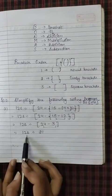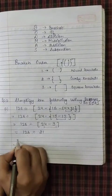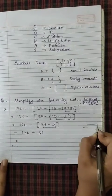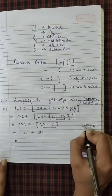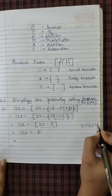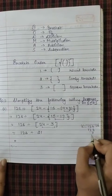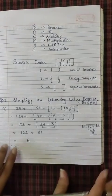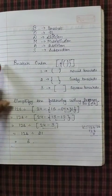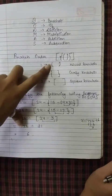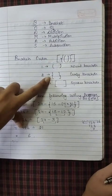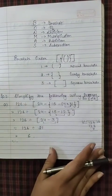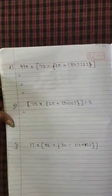So 126 when we divide by 21, it will be 6. So when we did the division, what is our answer? 6. It is easy. You just need to know which to solve first. First round bracket, then curly bracket, then square bracket. Few more questions I will do for you.